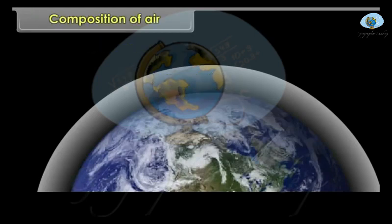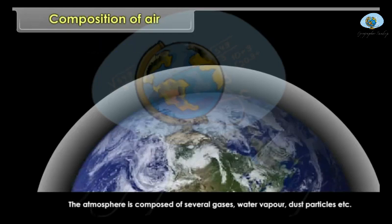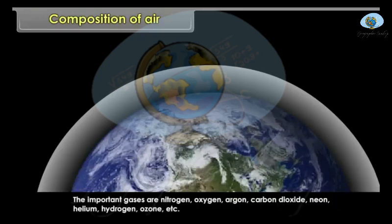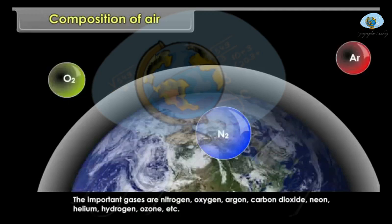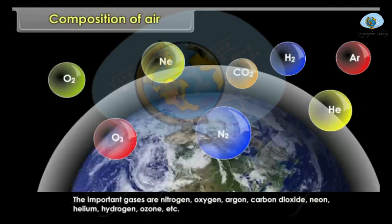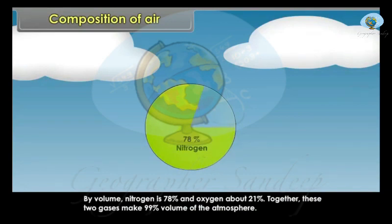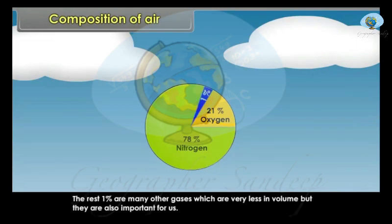Composition of Air. The atmosphere is composed of several gases, water vapour, dust particles, etc. The important gases are nitrogen, oxygen, argon, carbon dioxide, neon, helium, hydrogen, ozone, etc. By volume, nitrogen is 78% and oxygen about 21%. Together, these two gases make 99% of the volume of the atmosphere. The remaining 1% consists of many other gases which are very small in volume, but they are also important for us.